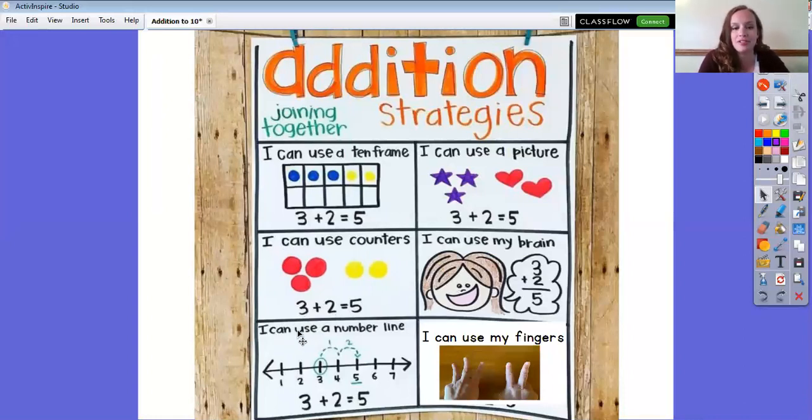We've also in the past used a number line which is a great way to solve addition problems. So starting on the number 3 and then hopping forward 2 numbers since we're adding more. 1, 2 and then you get the answer as 5.